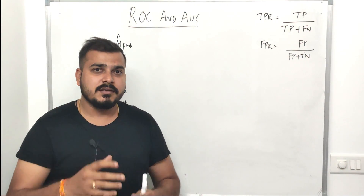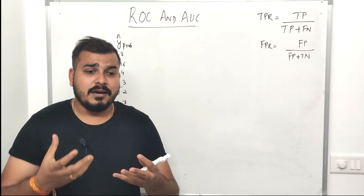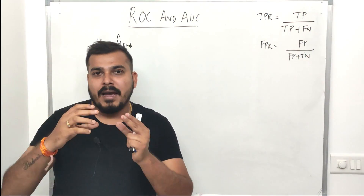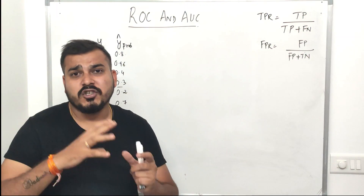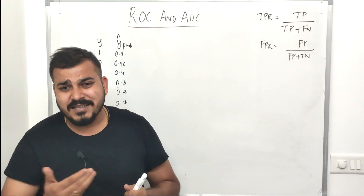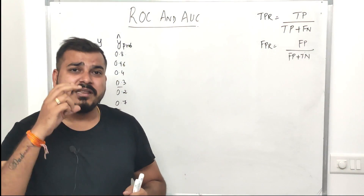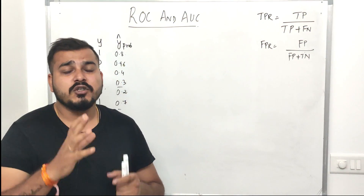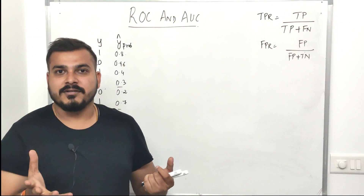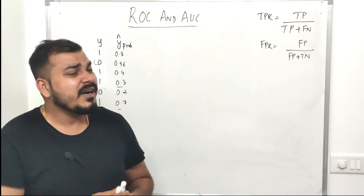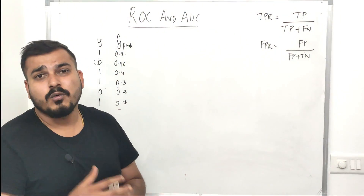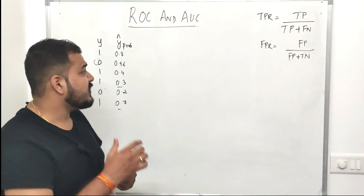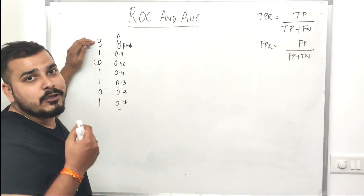In each and every use case, the threshold can play a very important role. For example, suppose you are working in a healthcare domain project where predictions are very critical. At that time, the threshold value should be set based on the type of problem — suppose you want higher true positive rate and less false positive rate. Based on that we can play with the threshold, and a domain expert will guide you, but you need to show how your model is performing in the form of graphs.